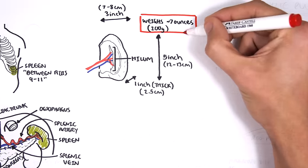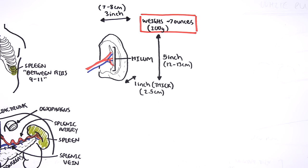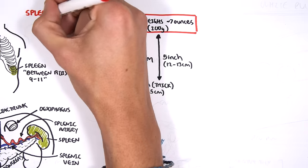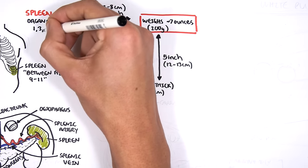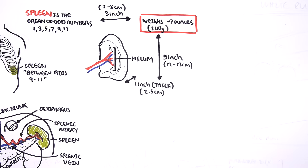This is on the heavier side. From all these numbers, we have odd numbers in inches and an ounce, so we can call the spleen the organ of odd numbers: 1, 3, 5, 7, and 9 — with 1, 3, and 5 being the dimensions of the spleen in inches, 7 the weight in ounces, and the spleen lying under ribs 9 to 11.